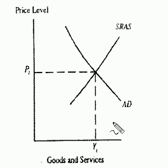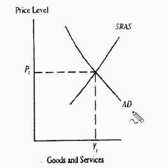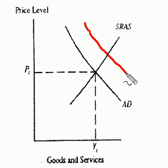Now, according to this diagram, if the effects of an expansionary monetary policy are fully anticipated by decision makers, what will this policy do to aggregate demand and aggregate supply? Well, initially, it would cause the aggregate demand to shift out to the right. That's certainly very true.